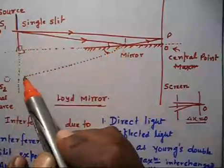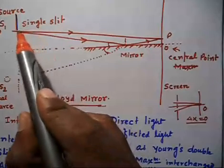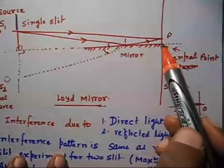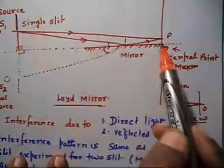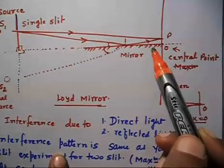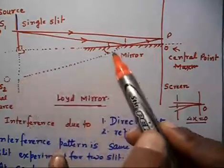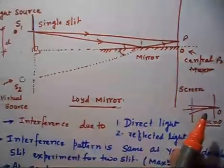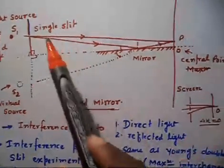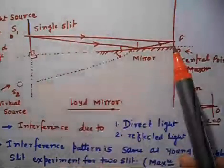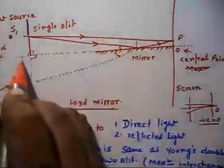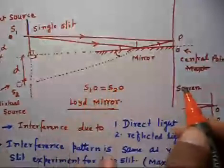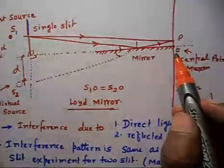If I extend this line, in terms of path length I can think of the light reaching point O. The path from S1 to O equals the path from the virtual source S2 to O, so S1O equals S2O. This distance is again D. So for point O, the path lengths are equal, which would normally give a maxima. However, in this case it will not be a maxima.